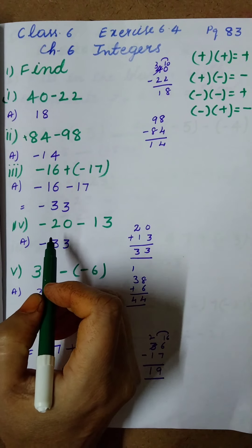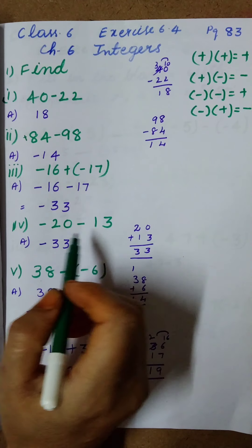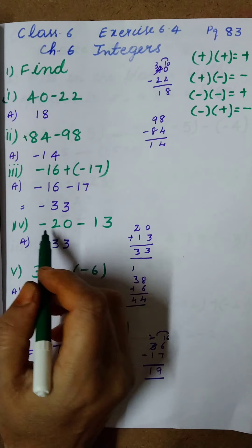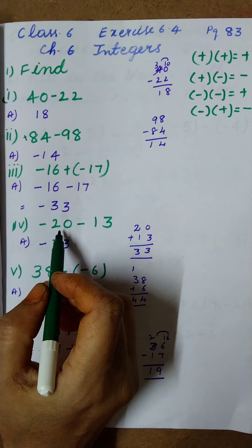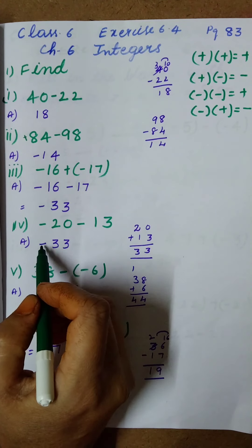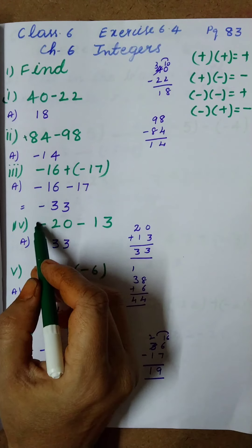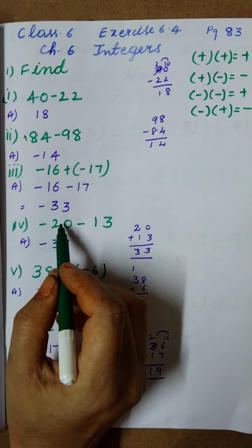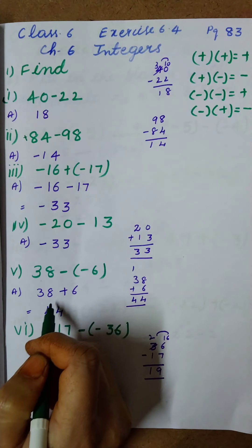The fourth question is minus 20 minus 13. Minus into minus gives plus, so we do addition: 20 plus 13 equals 33. The biggest number is 20 and it has a minus sign, so the answer is minus 33.